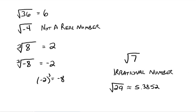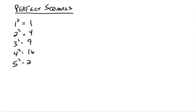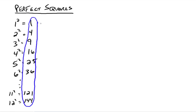Some numbers to keep in mind are called perfect squares. 1 squared is 1, 2 squared is 4, 3 squared is 9, 4 squared is 16, 5 squared is 25, 6 squared is 36, and so on. 11 squared is 121, 12 squared is 144. The numbers on the right — 1, 4, 9, 16, 25, 36, and so on — are called perfect squares. It's a good idea to know the first 12. Knowing that 64 is a perfect square (8 squared) will speed things up later.